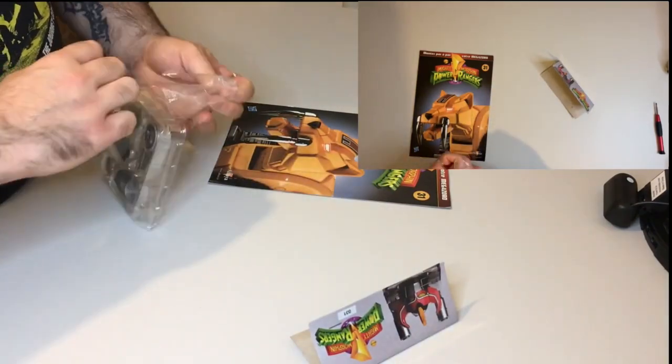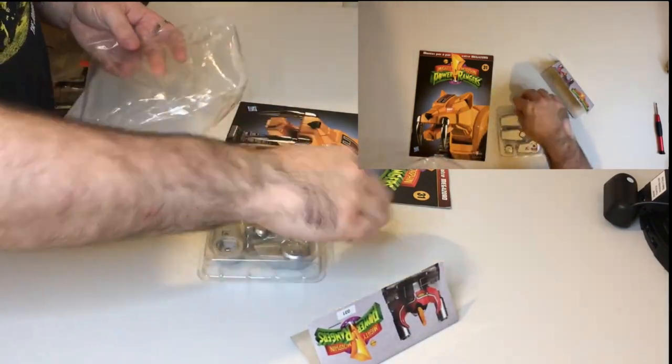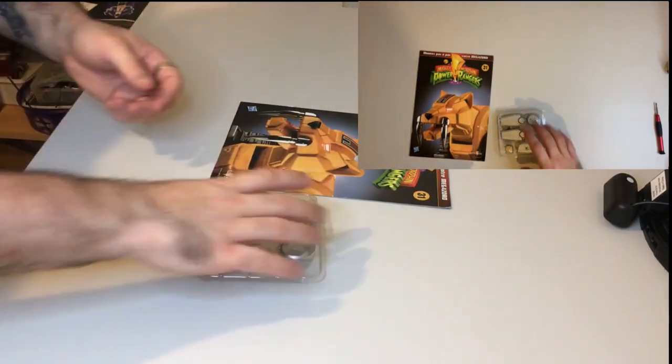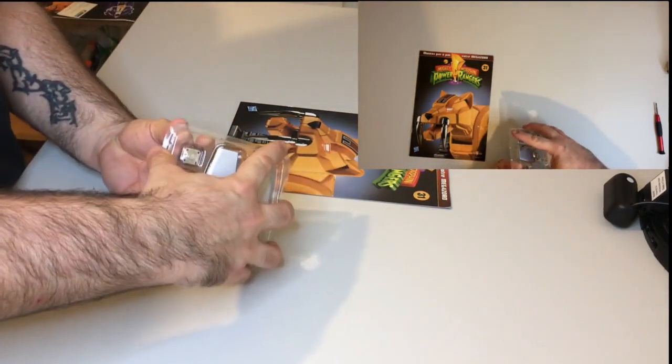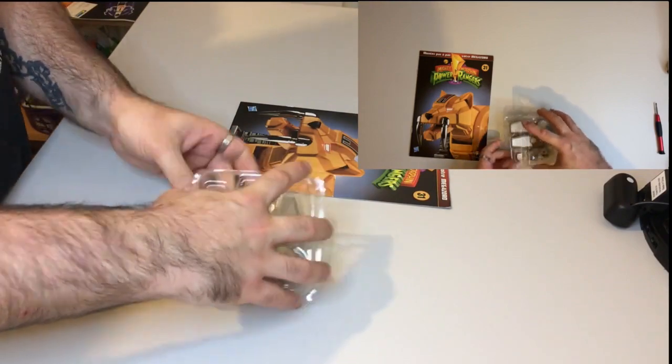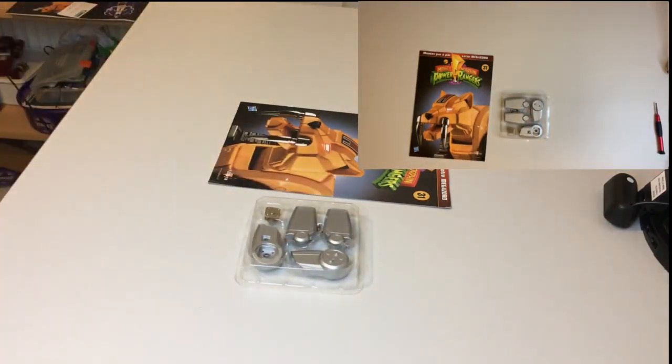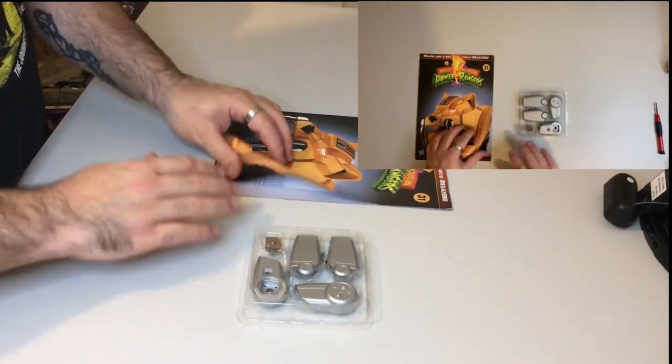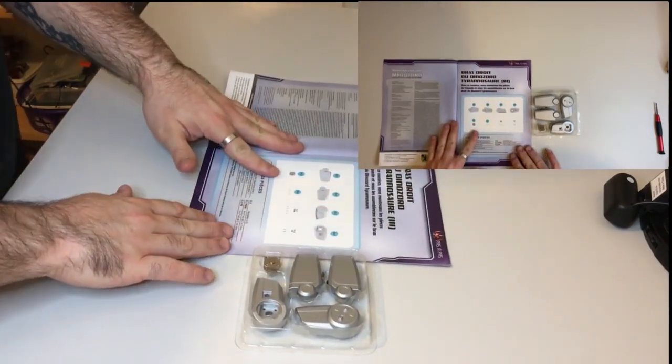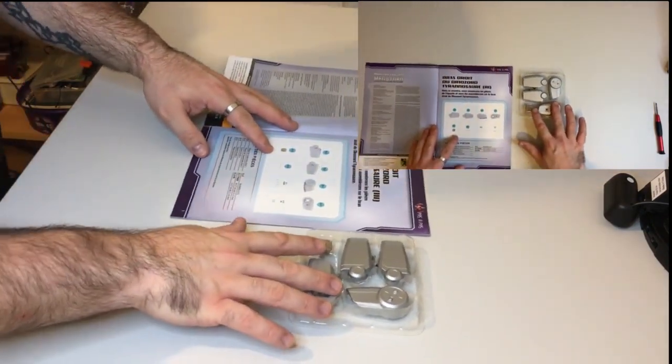We're going to be finishing off the upper arm, or just the upper arm, of the Tyrannozord's right arm. So this is the mirror image of issue 28. We've got a shot of our packaging, let's do our parts check and get into it.